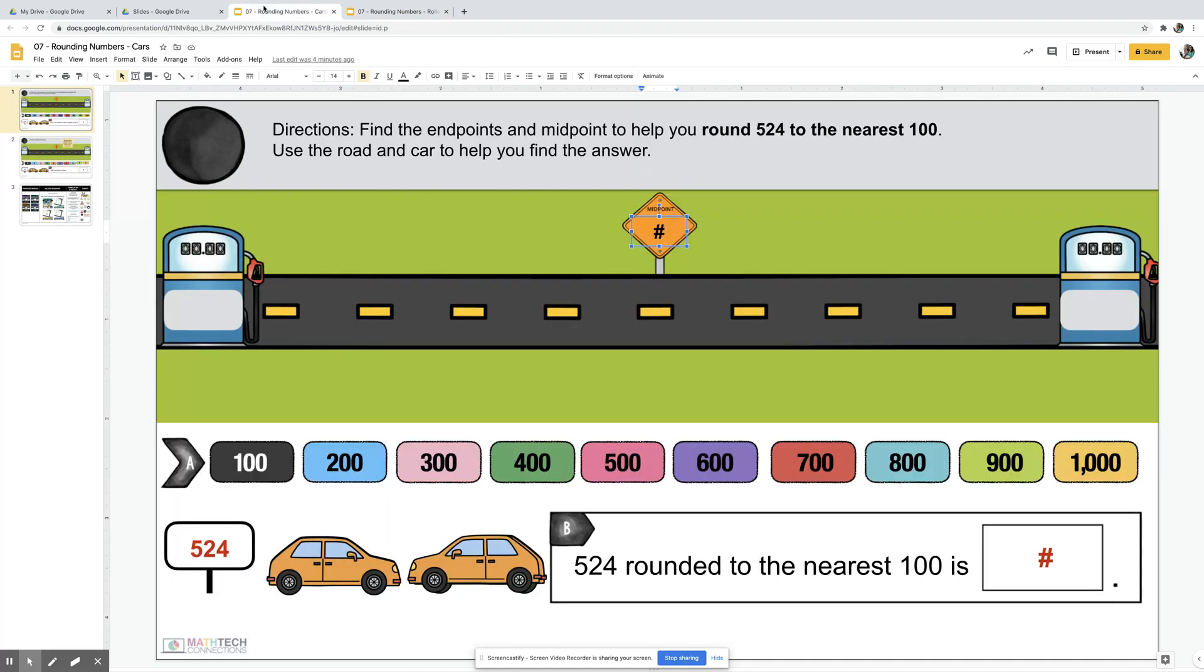This is the second visual. This is more linear, like a regular number line students are used to seeing. Same thing – the midpoint would be 550, the endpoints 500 and 600, and then they can plot this little sign at 524.